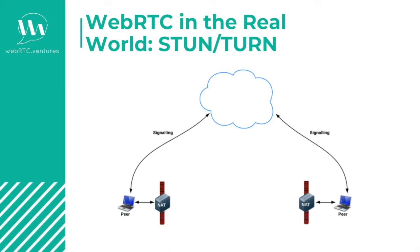In the real world, peers are likely behind NAT networks or restricting firewalls. In such cases it is impossible to make a direct connection, at least not without a traversal strategy. That's where the ICE framework and STUN and TURN servers enter.